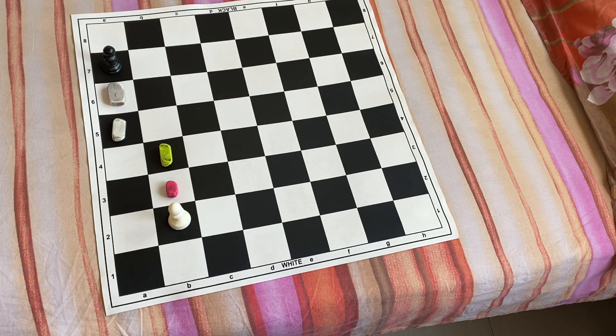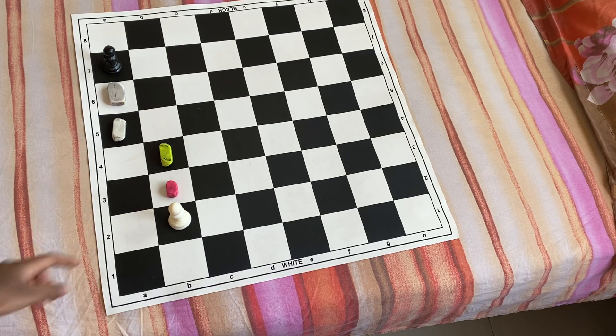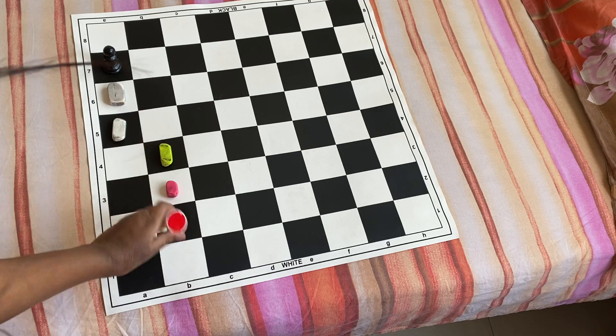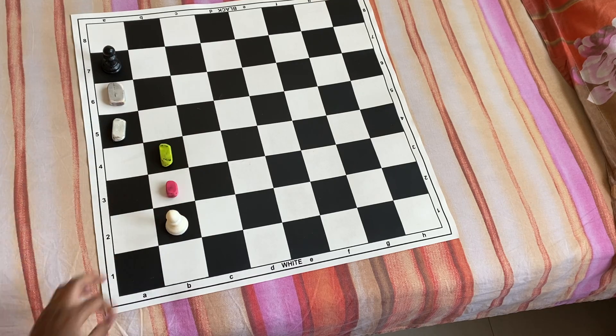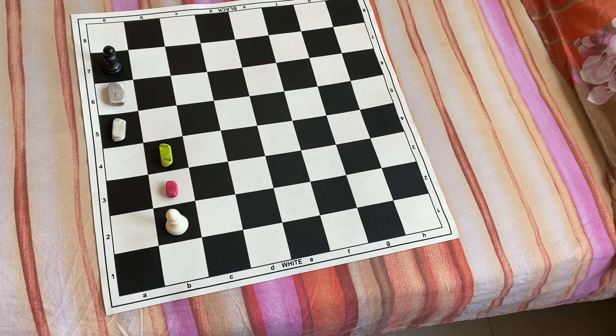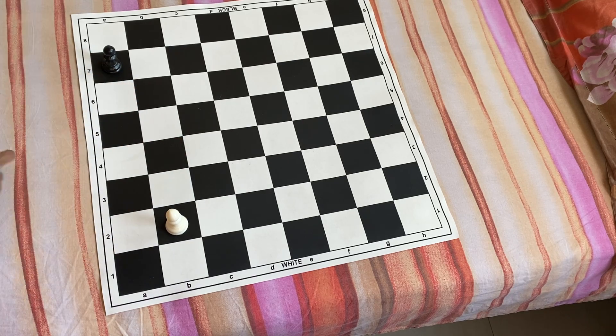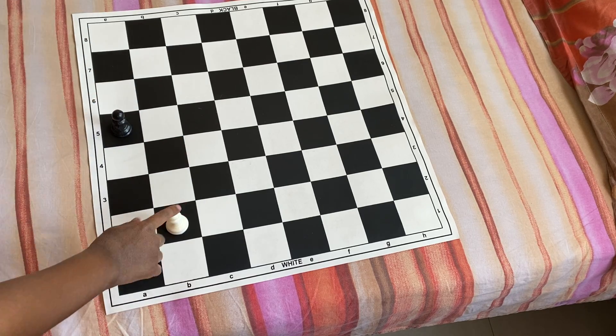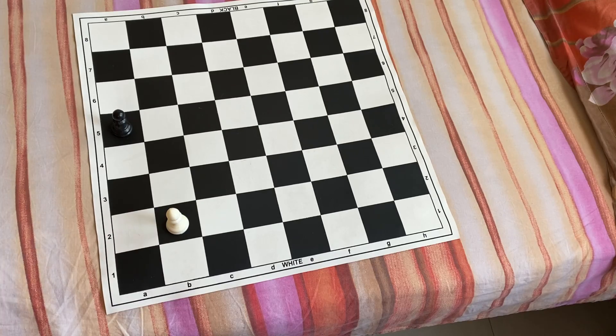So as now you have understood how it moves, it can move 1 or 2 steps forward. Let us now see how it captures. Now, in this position, it is white's turn.